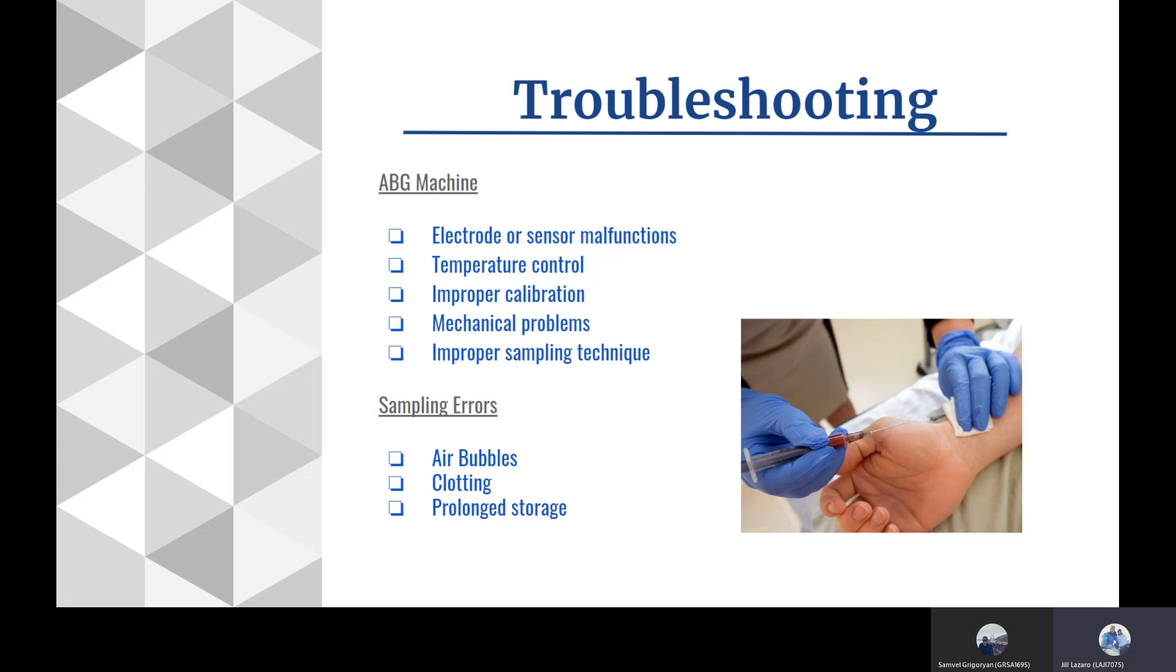As far as sampling, there are a couple of things we need to look at. We need to make sure we don't have any air bubbles in our samples. We need to make sure our blood is not clotted and that we're not keeping our samples for a long time. After 15 minutes, we need to take another sample. These are common things to look at for troubleshooting in regards to our ABGs, analysis, and calibration.